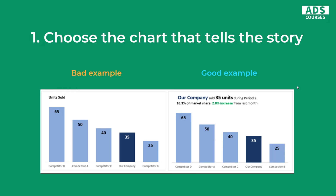Another example is displayed here — bad and good examples of telling a story with our title. The bad example here is not that bad because it's still a simple title. But you could go further, like in the example on the right, and tell a story with your title. You need to be cautious though — you don't want to tell the same thing that is actually on your chart. Sometimes simple is better.